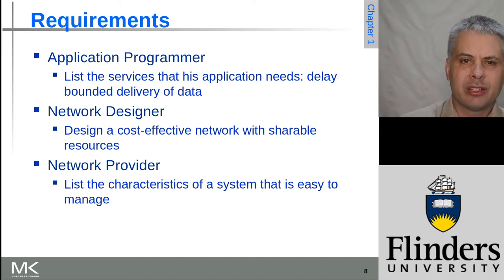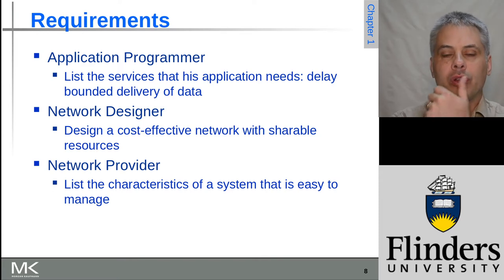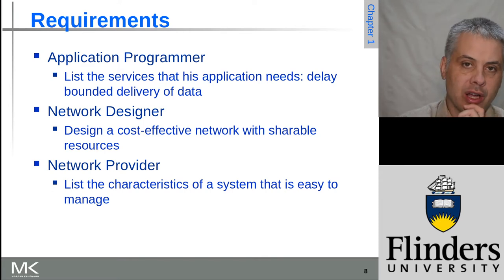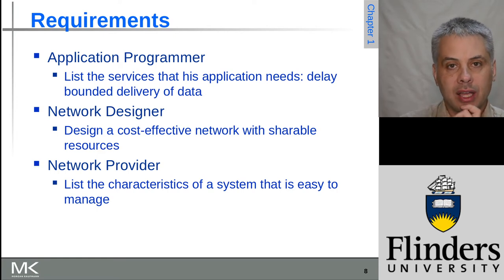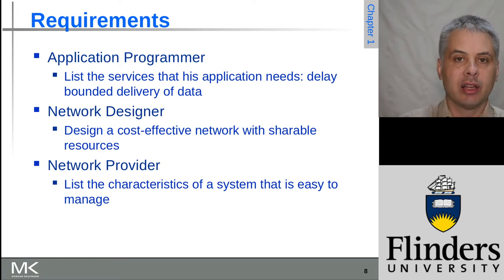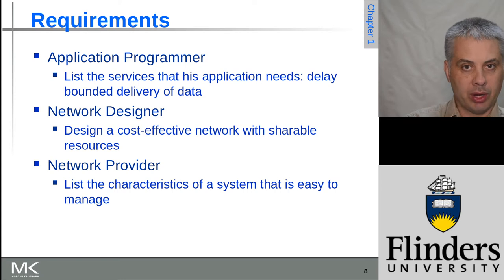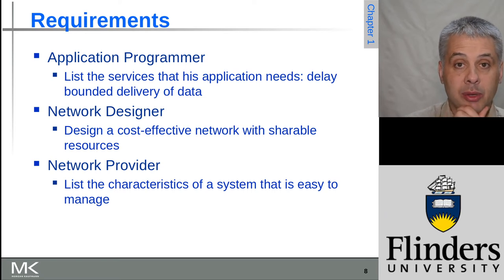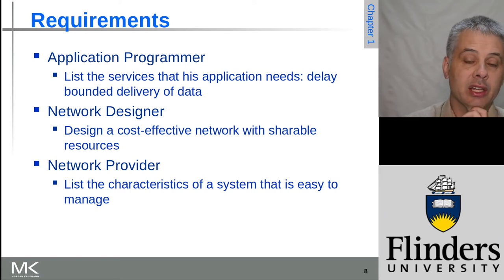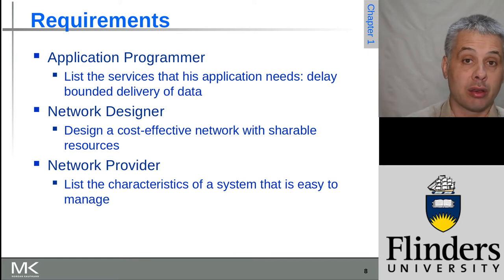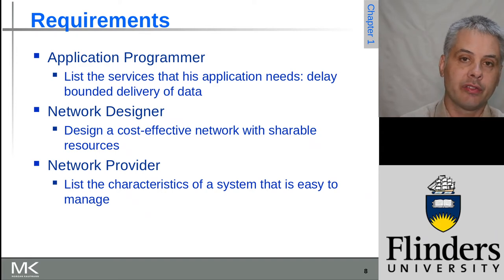What application programmers need to do is think about what the needs of their application are. Typically, this will be in terms of how much data they need and what the delay limitations are. So if we're doing video conferencing, we need the delay for the video to come from one device to another to be quite short — ideally under 100 milliseconds — so that there's no real perceptible delay for the users.